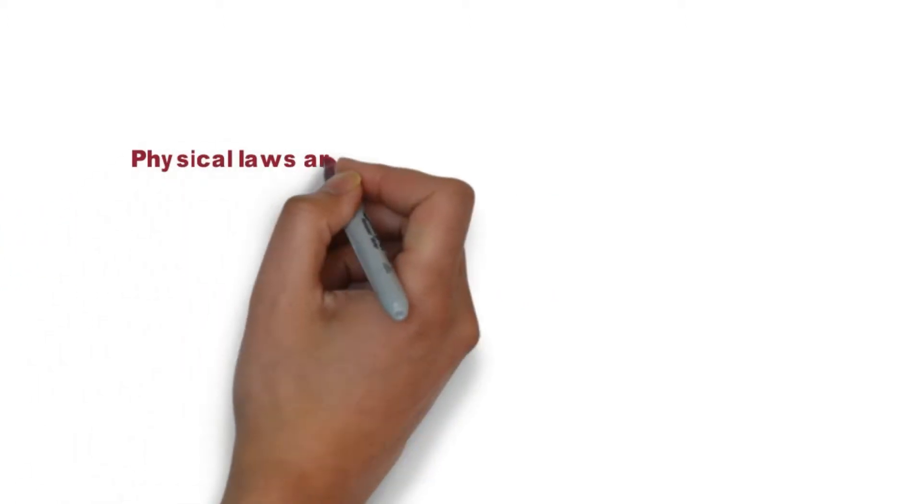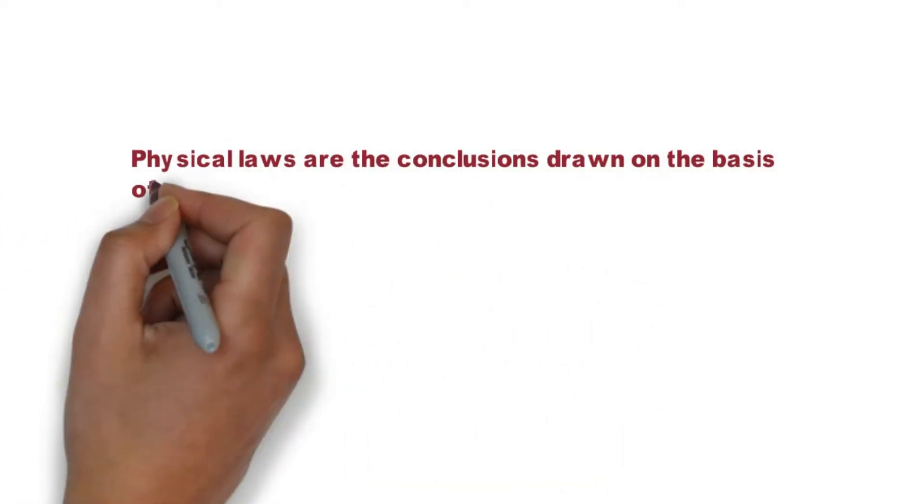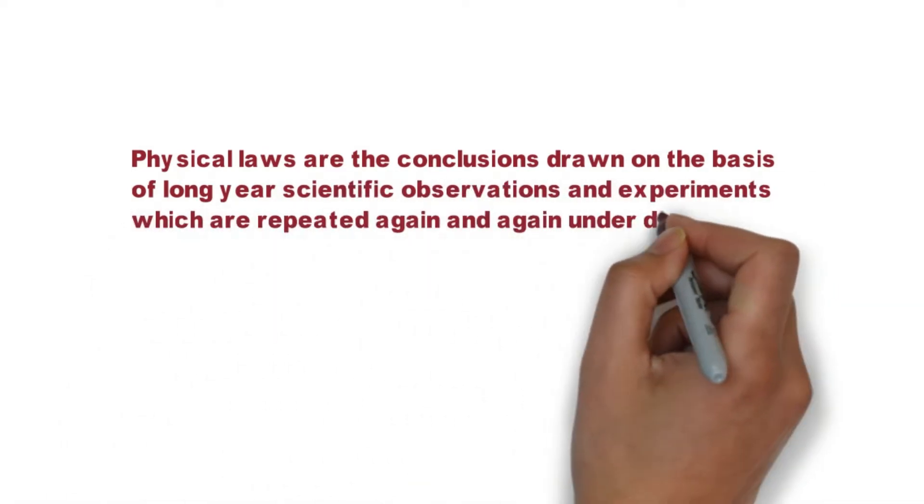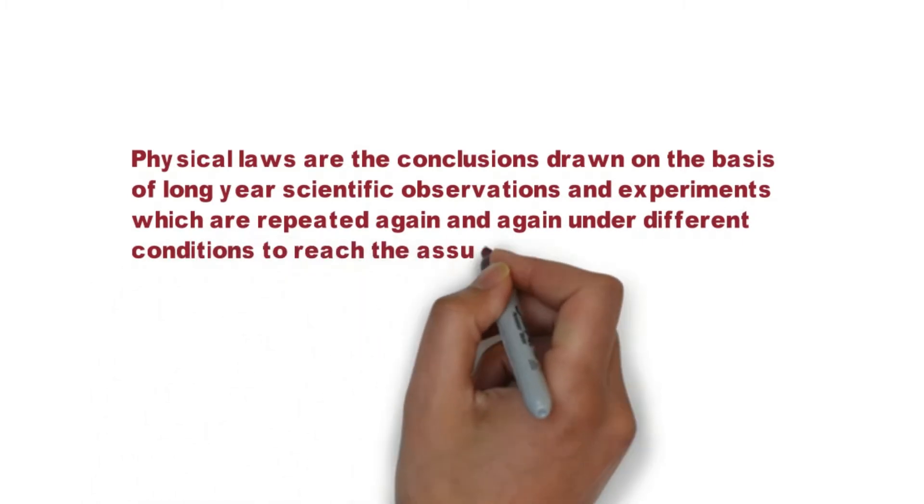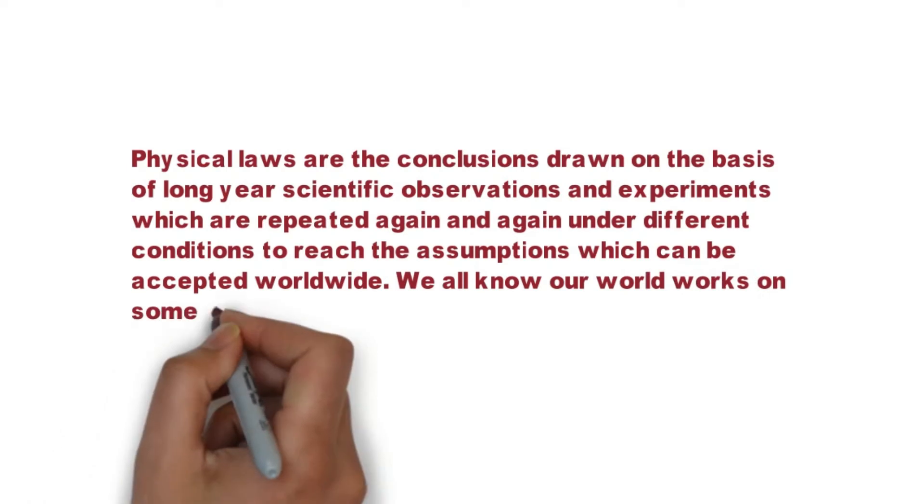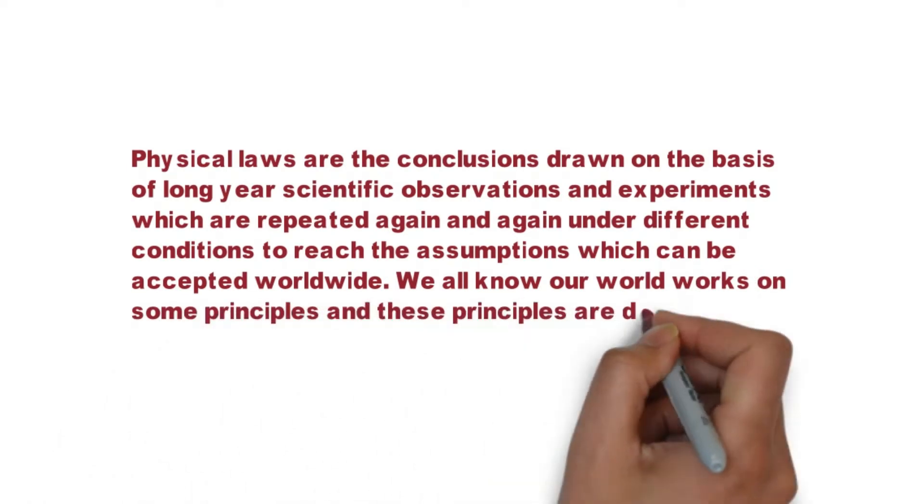Physical laws are the conclusions drawn on the basis of long-year scientific observations and experiments which are repeated again and again under different conditions to reach the assumptions which can be accepted worldwide. We all know our world works on some principles, and these principles are drawn by our scientists in the form of certain physical laws.